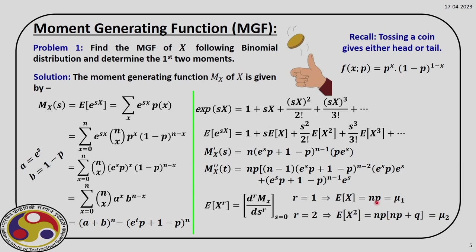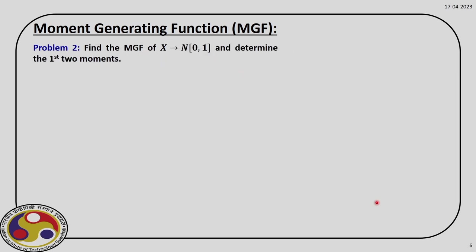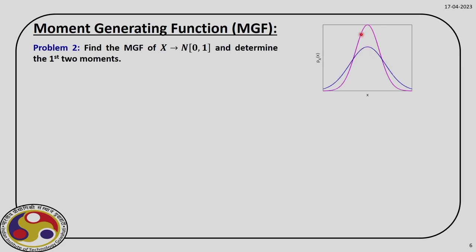Let us try the normal distribution with 0 mean and unit standard deviation. We know the shape of the normal distribution — it is a bell-shaped curve. Because the mean is 0, the highest ordinate is at 0, and depending on the standard deviation we get different shapes. The expression of the standard normal distribution is on your screen, and the domain for this random variable is minus infinity to plus infinity.